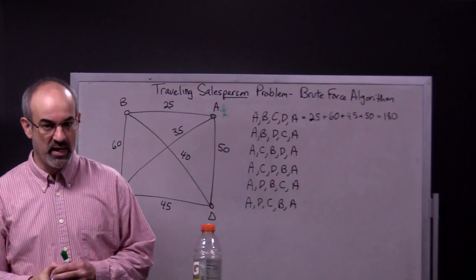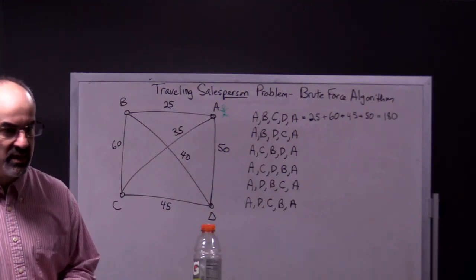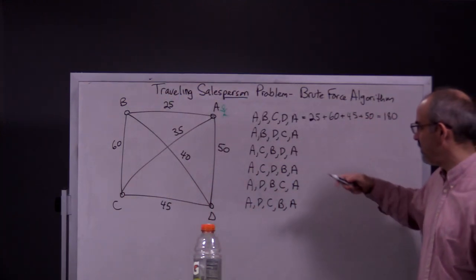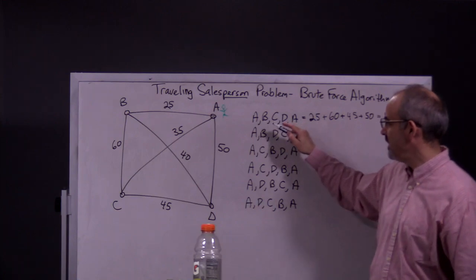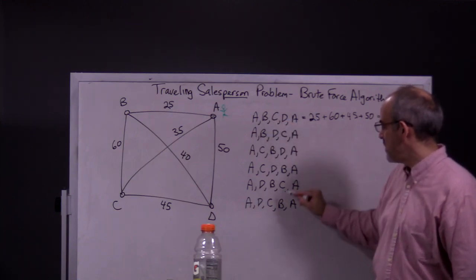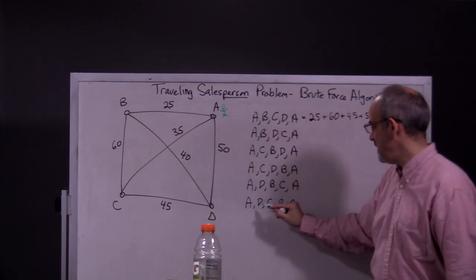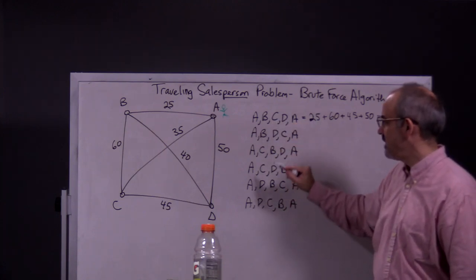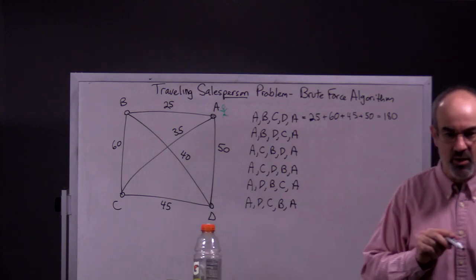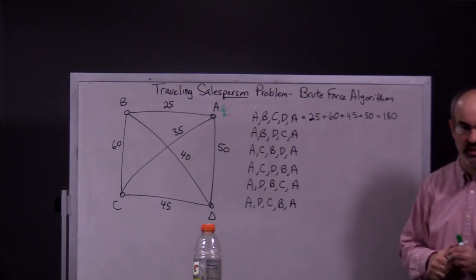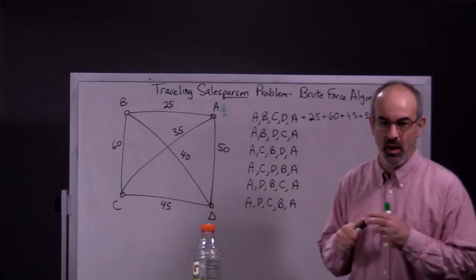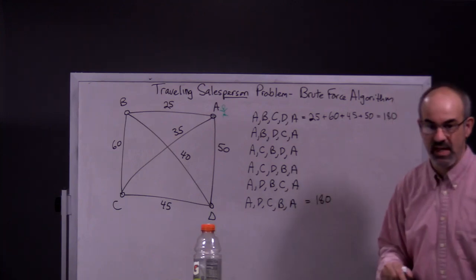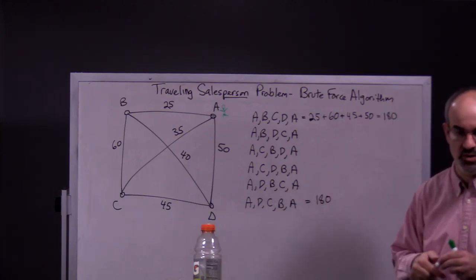Now, you're going to think, oh, this is kind of, even though it's only six things, it's kind of hard to do. But, notice that one of these other routes is actually the same thing, but this one in reverse. So, if you look, A, D, C, B, A, this one and this one are actually the same thing. One's just reversed. It does count as a different tour or route. So, you have to write it down. But, it's going to have the same mileage or cost to do.